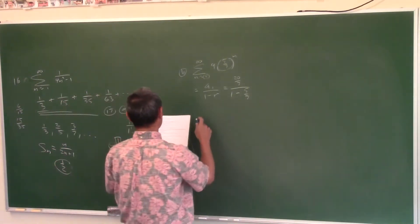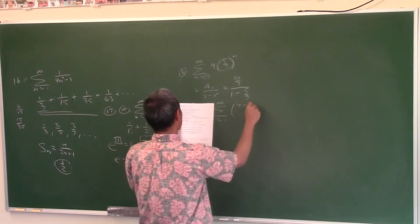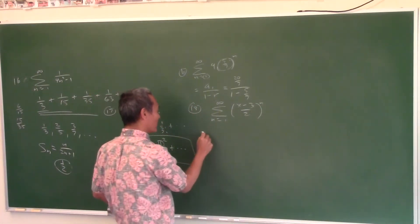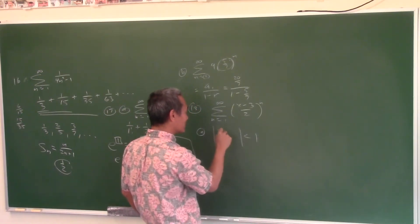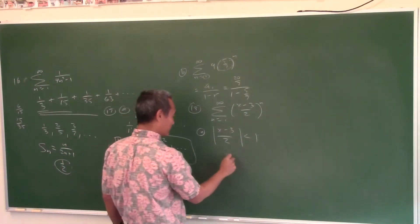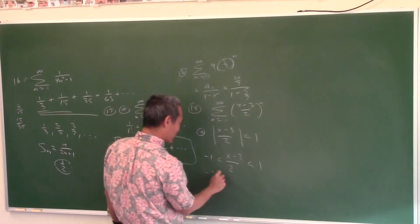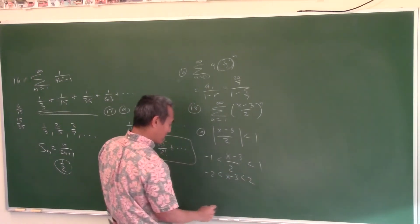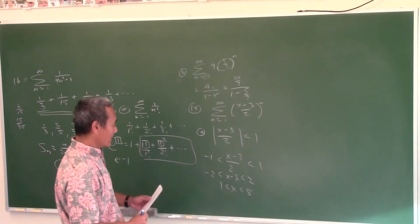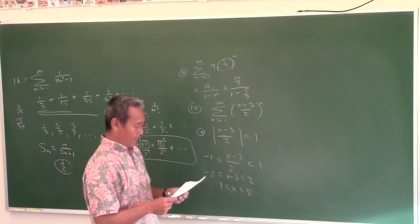Something to the n-th power is geometric. To find the interval of convergence, the absolute value of r must be less than 1 — the thing in parentheses is r, your common ratio. Solve that: multiply everything by 2, add 3 across the board, so x is between 1 and 5. That is your interval of convergence — x must be between 1 and 5 for this series to converge.